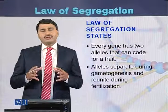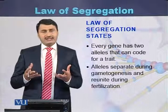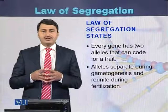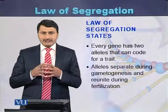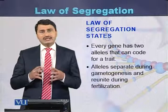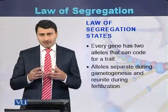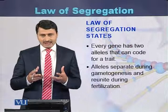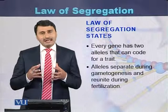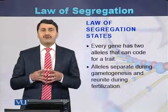To conclude, the law of segregation states that every gene has two alleles. The gene encodes for a trait. These two alleles separate from each other during the process of gametogenesis or gamete formation, and the alleles unite with each other during the process of fertilization.